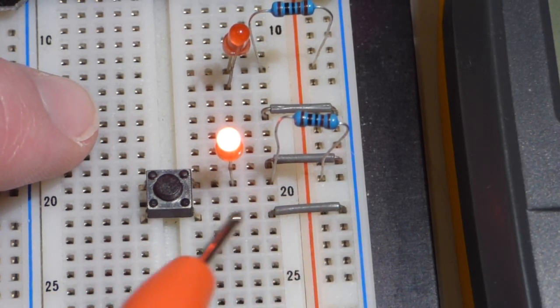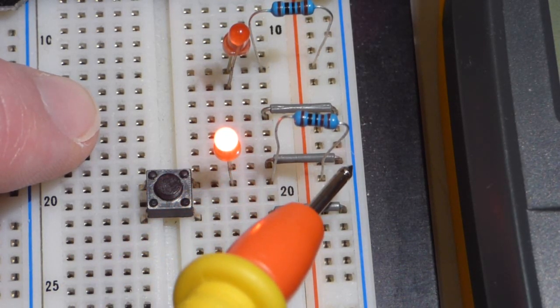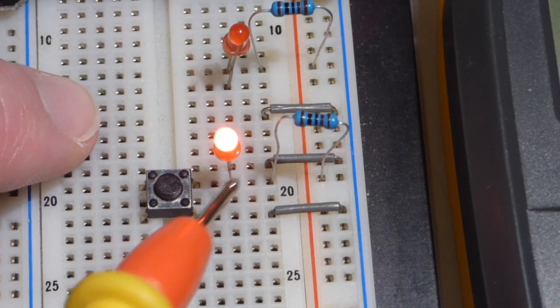All of this goes to the negative rail. So there's no reason for it to go through the LED to the negative rail there. We're connecting negative rail there to negative rail there.